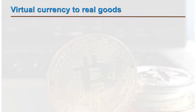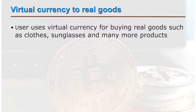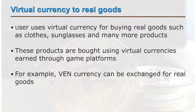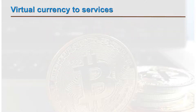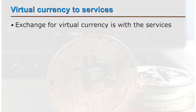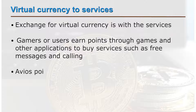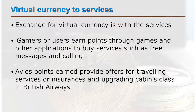In the virtual currency to real goods form, the user uses virtual currency to buy real goods such as clothes, sunglasses, and many more products. These products are bought using virtual currencies earned through game platforms. For example, win currency can be exchanged for real goods and commodities like clothes, accessories, and precious metals. The third category is virtual currency to services, where the exchange of virtual currency is for services. For example, gamers and users earn points through games and applications to buy services such as free messages and calling. Another example is AVS points, earned to provide offers for traveling services, insurance, and upgrading cabin class in British Airways.